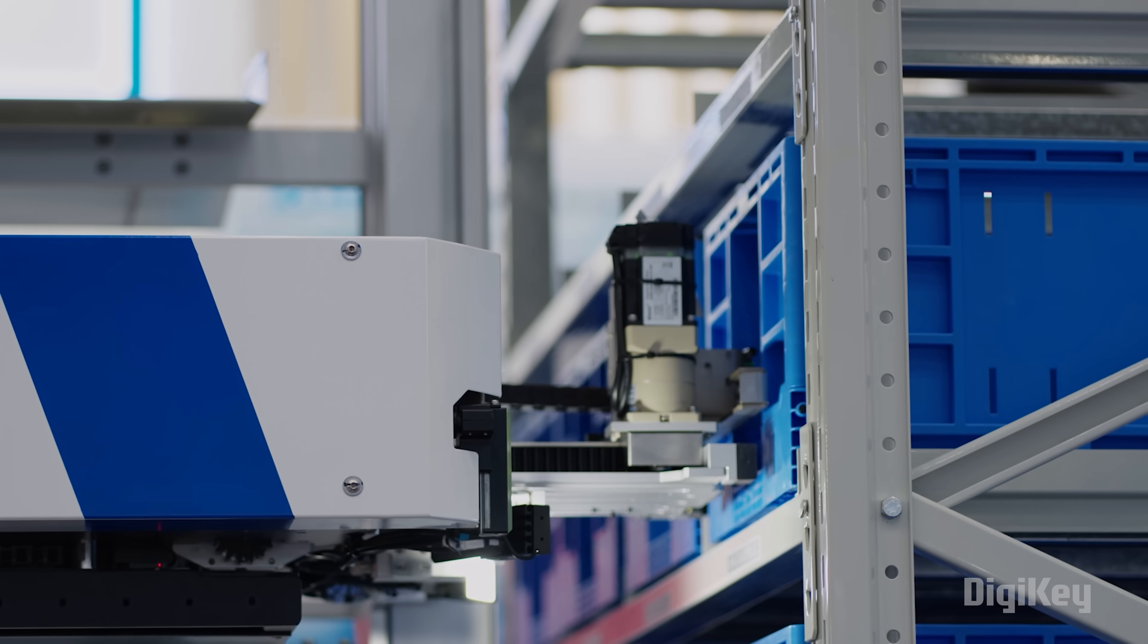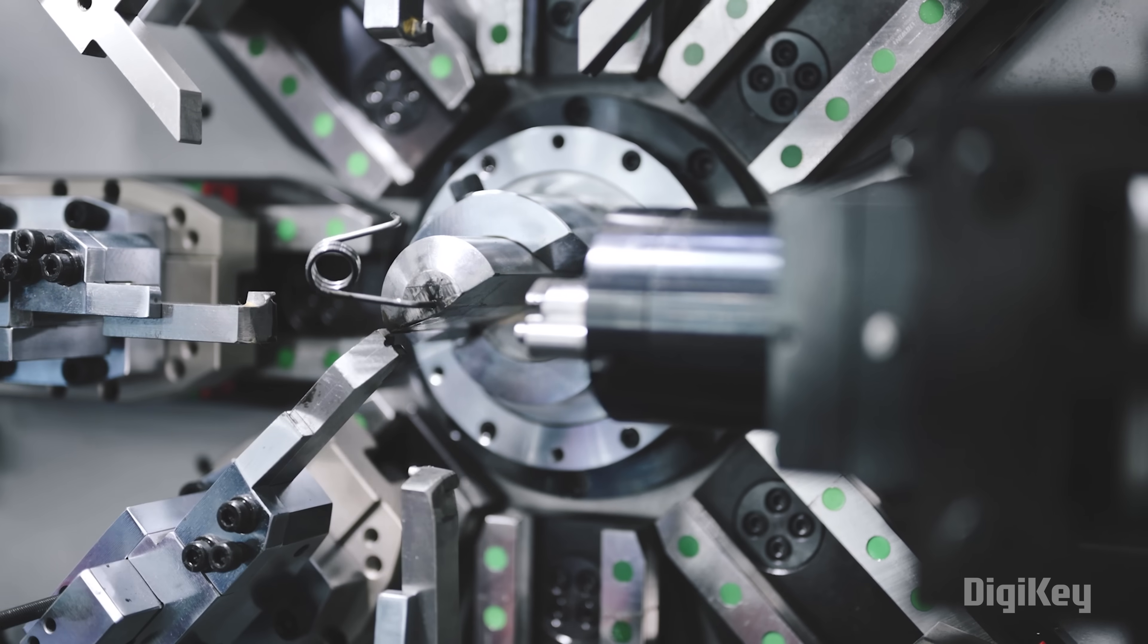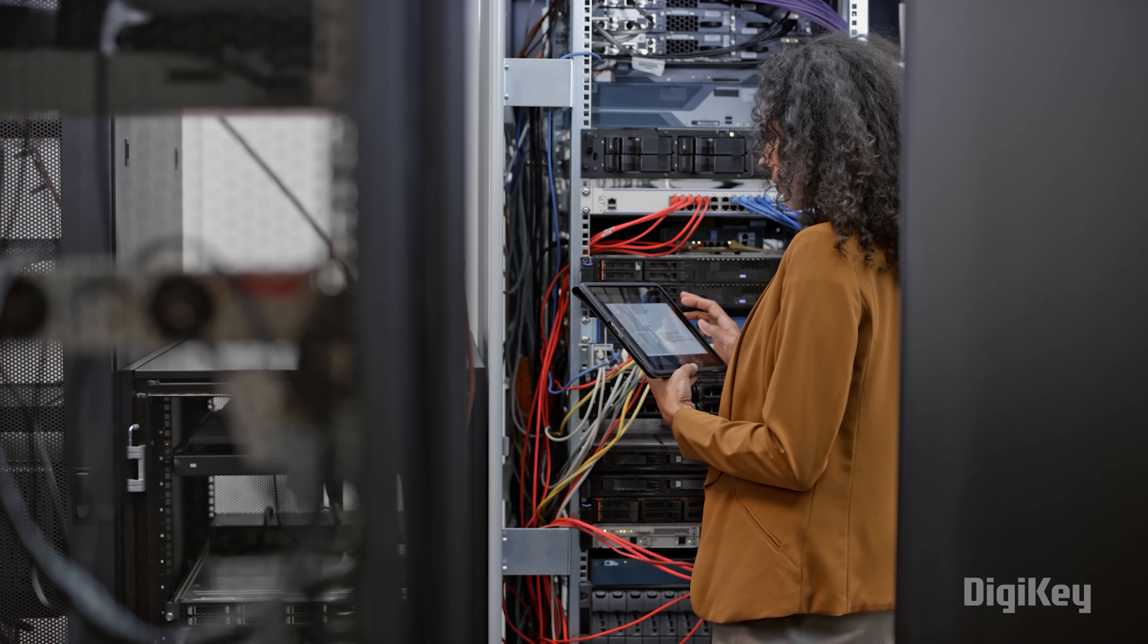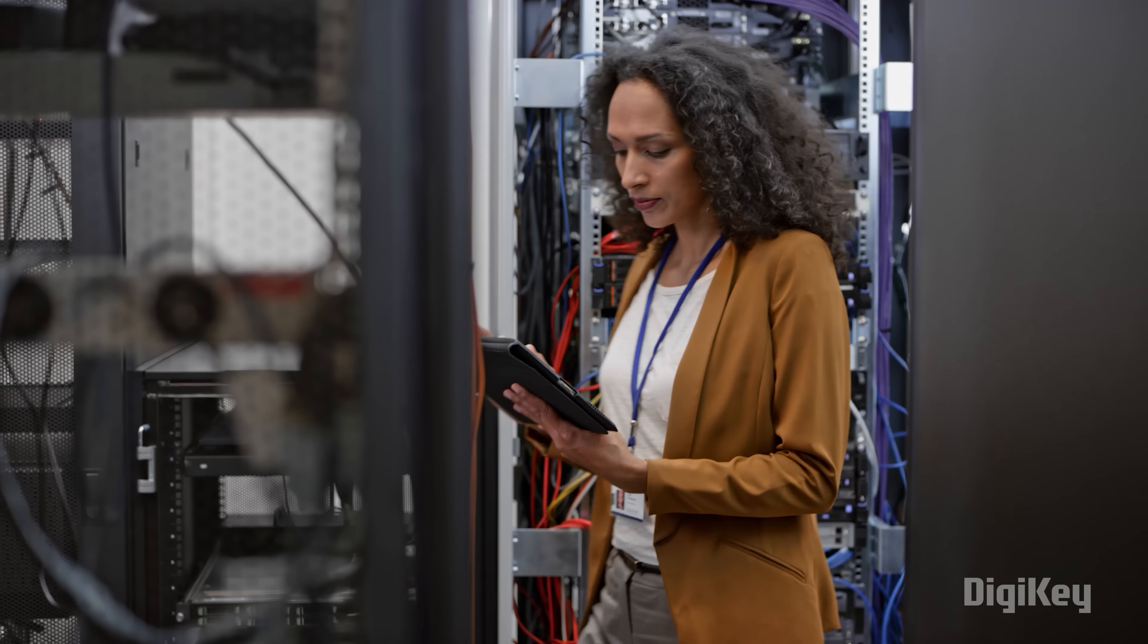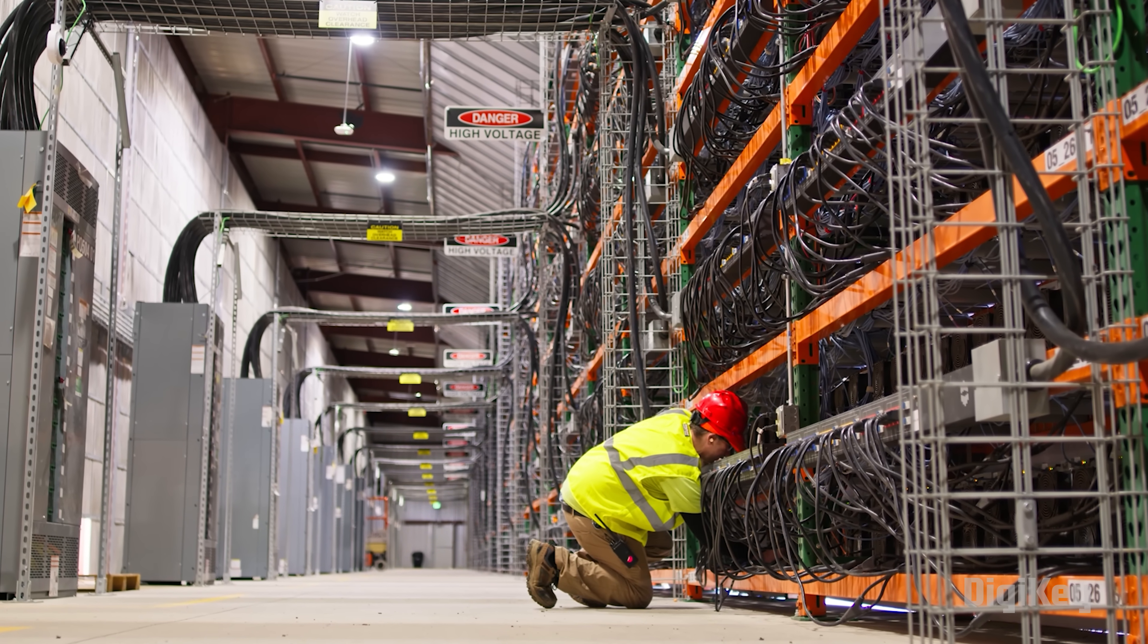In factories around the world, automation systems work with speed and precision—welding, assembling, and testing. But behind every movement lies an invisible force. It's not just about the robot, it's the systems working behind the scenes.